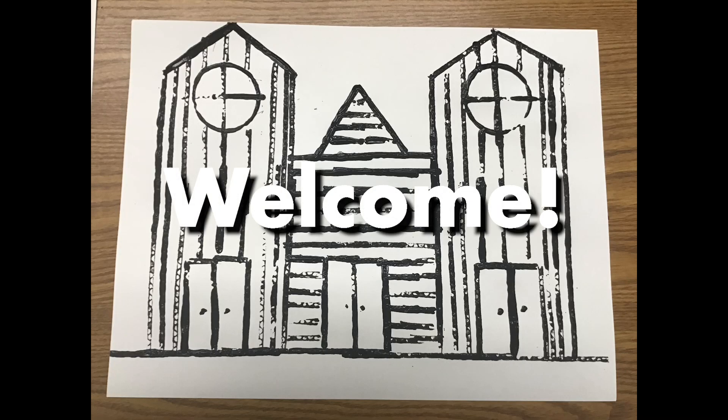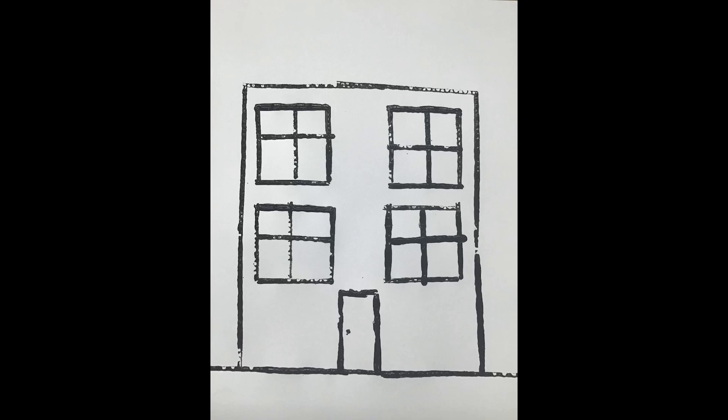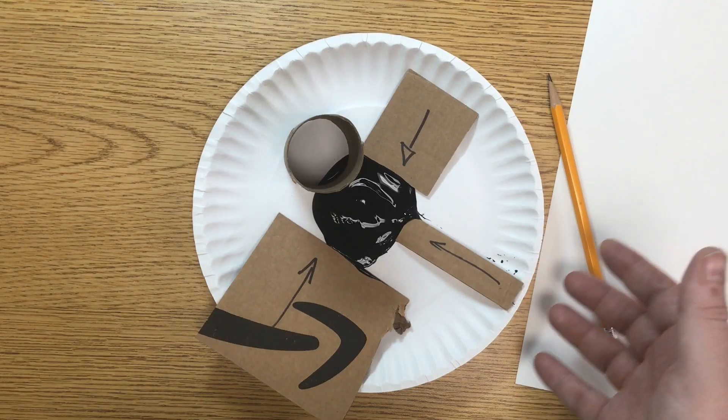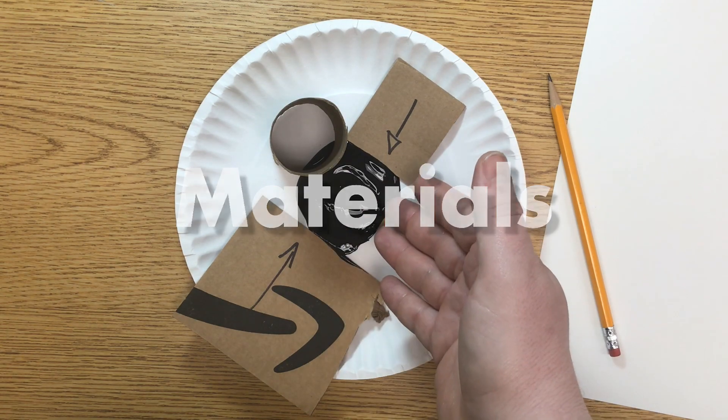Welcome to Mr. News Art Class. Today we're making architectural designs and it's real easy to do. The materials we're using for this, we have a plate with some black paint, tempera paint here in the middle.